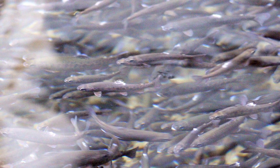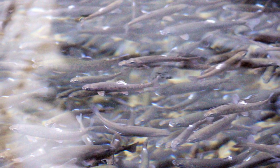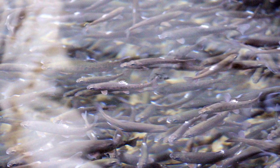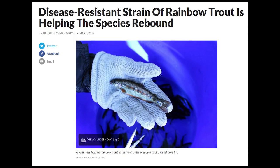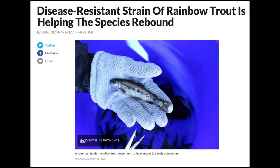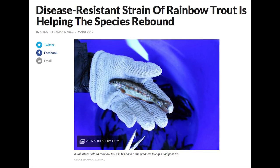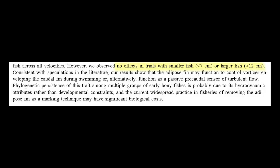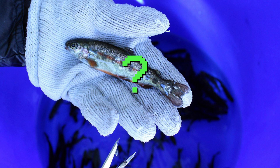A question for discussion: some hatcheries have their adipose fins clipped before stocking trout into the wild, helping fishermen differentiate between stocked and wild fish. In other cases, clipping the adipose fin has helped biologists identify and monitor previously released disease-resistant strains of fish in the wild. From the research, it appears that only trout in the 7 to 12 centimeter range depend on the adipose fin for swimming performance, and only in turbulent waters. Do the benefits of trout research and conservation trump the temporary swimming disadvantage an adipose-clipped trout experiences? What's your opinion? Comment down below.